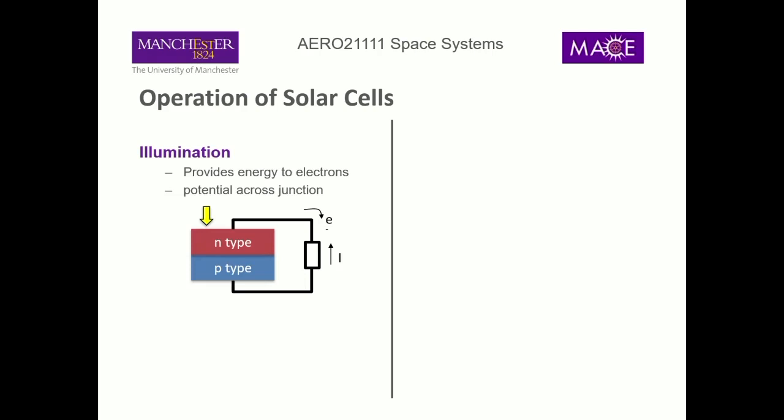By convention, if electrons move in one direction, current flows in the opposite direction. This allows our P-N junction to generate electricity. Photons add energy to the system, allowing electrons to jump into the conduction band and flow through the circuit — it's not disobeying the laws of thermodynamics; you've got energy coming in from the photons. The P-N junction generates current this way.